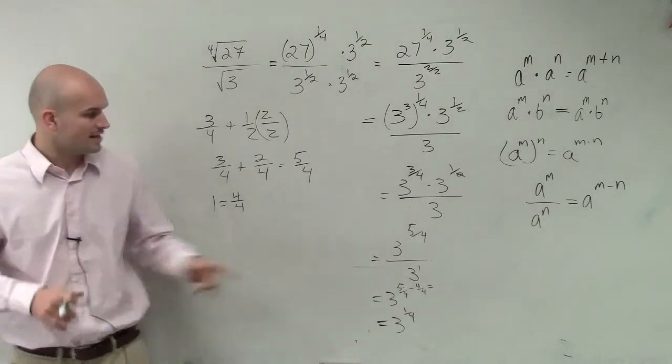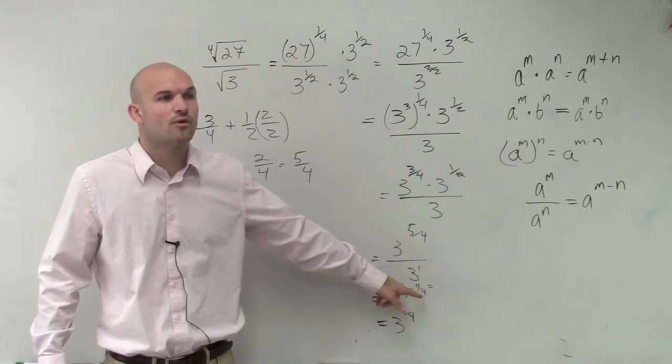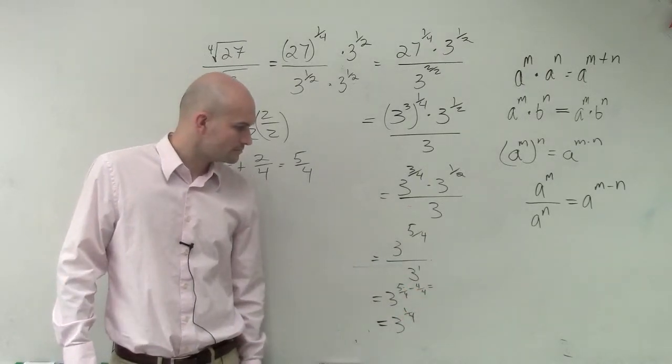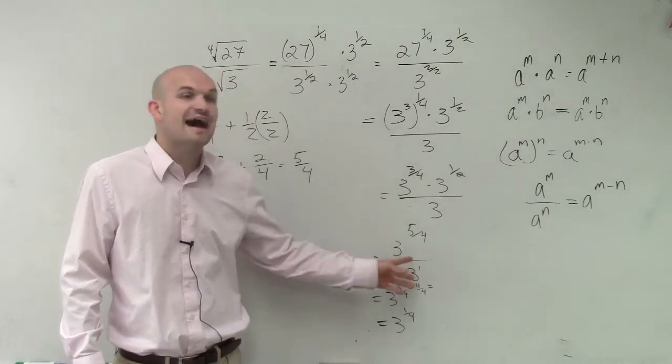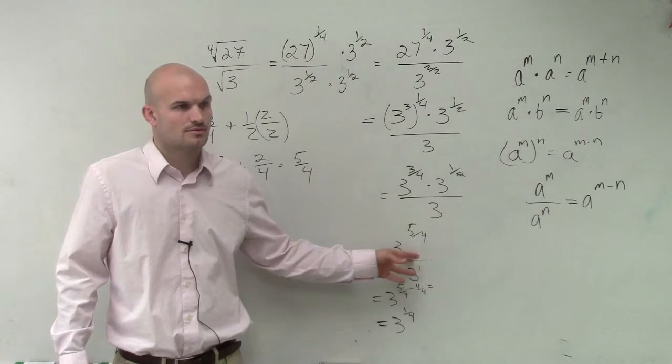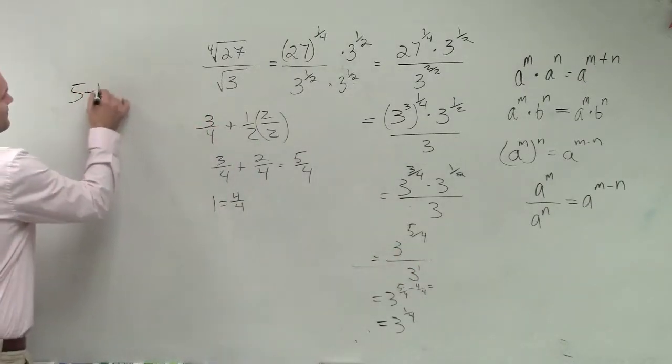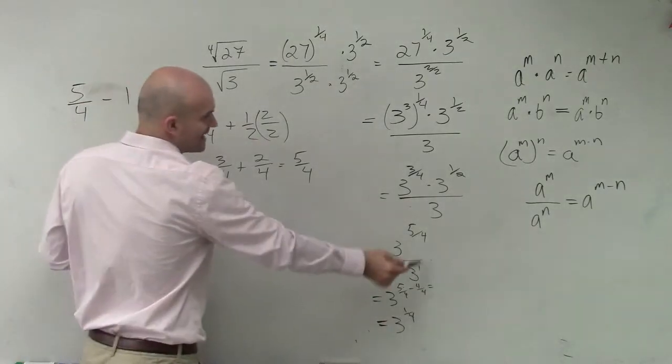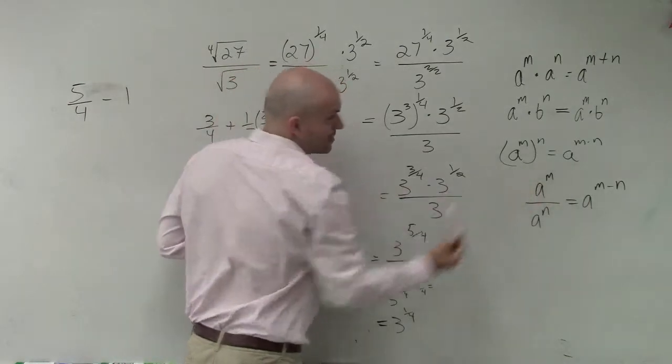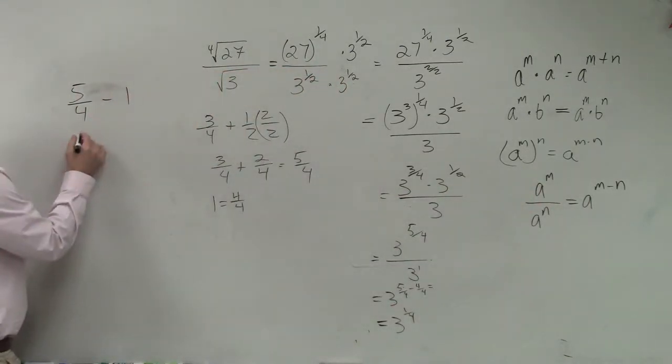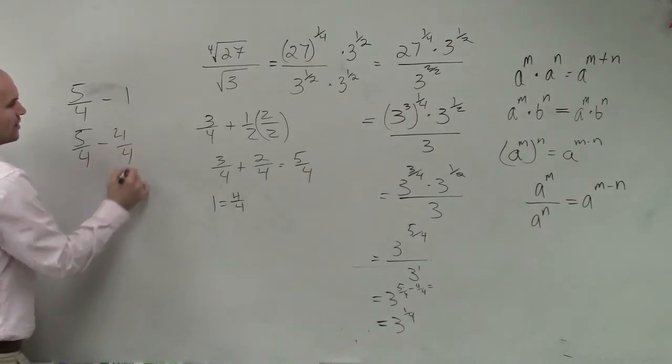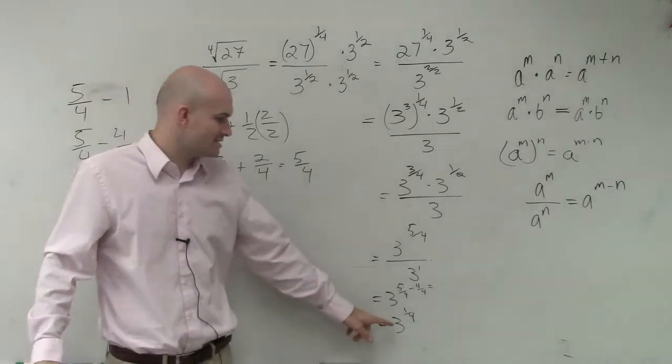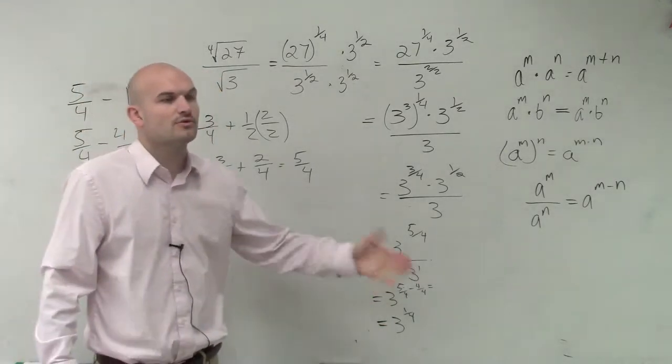Sorry? I converted 3 to the 1st power to 3 to the 4 over 4. Right? But what equals 3 to the 1 4th power? When you divide it? When you divide, you subtract the exponents. So what I have is 5 over 4, jeez. I have 5 over 4 minus 1, right? When you divide, you subtract the exponents. So I have 5 over 4 minus 1. Well, 5 over 4 minus 4 over 4. You have to convert this so now they have the same denominators, which is 1 4th. So your final answer is 3 to the 1 4th power.